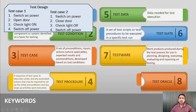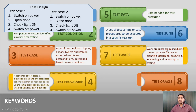Testware is defined as work products produced during the test process for use in planning, design, execution, evaluation, and reporting on testing. Whatever output you produce during the testing environment — test cases, test conditions, results, test environment — everything comes under testware. Any document produced or obtained during the testing phase is referred to as testware.